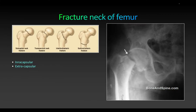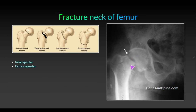Fracture of the neck of femur can be intracapsular or extracapsular. The intracapsular types include subcapital, transcervical, and basal; while intertrochanteric and subtrochanteric are extracapsular fractures, all assessable by x-ray. You will see a translucent line between the neck and the head. The subcapital fracture is the most common type seen in osteoporosis, and if not treated can lead to malunion or even avascular necrosis.